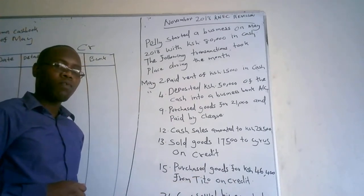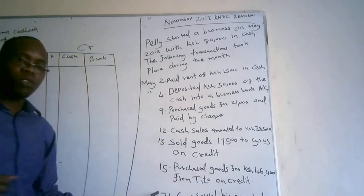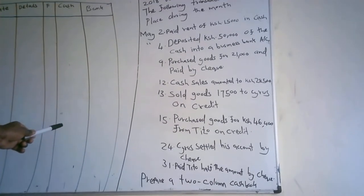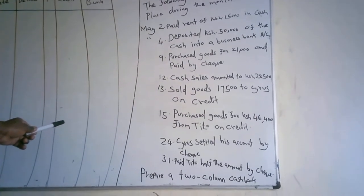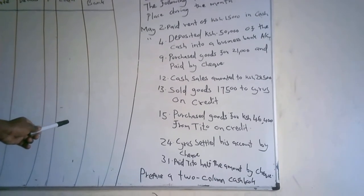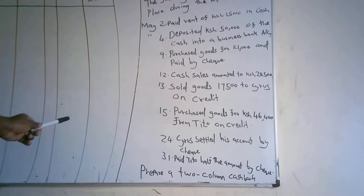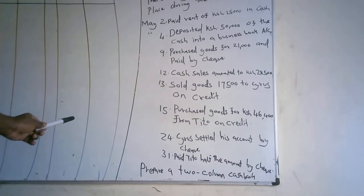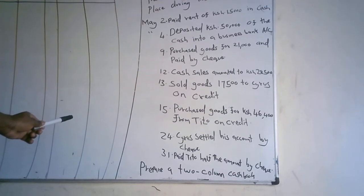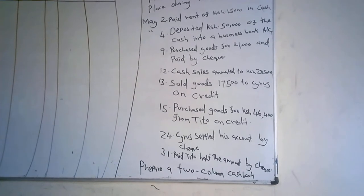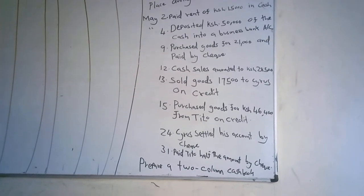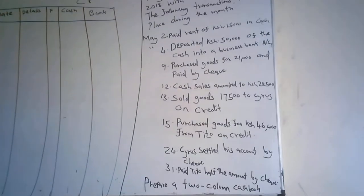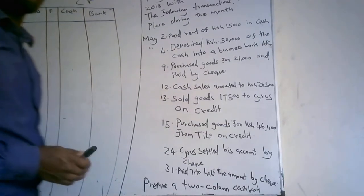May 24 — that was not being projected clearly — Silas settled his account by cheque. May 31: paid Tito half of the amount by cheque. The question requires us to prepare a two-column cash book, so I am going to project the format of a two-column cash book and then start preparing it.